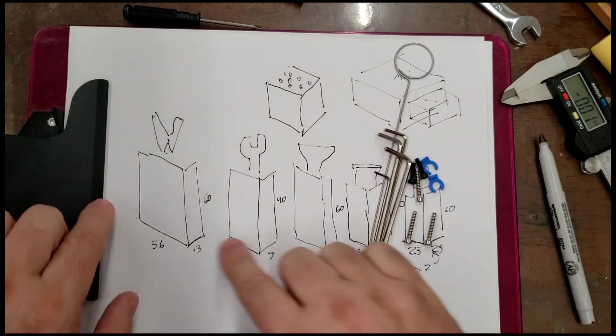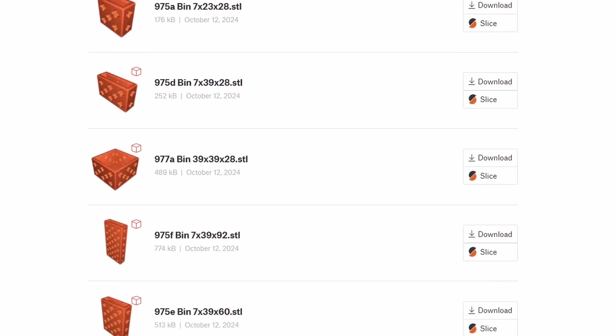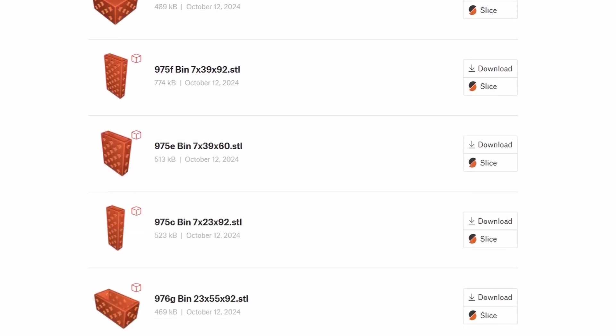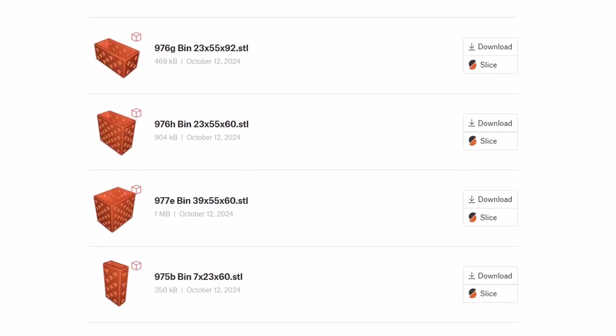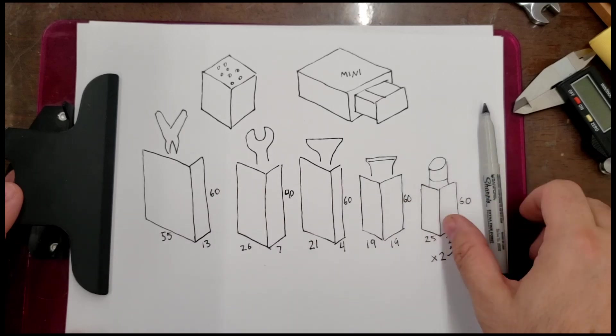So now I need to figure out which Storabloks will fit these. So looking at the file list for Storabloks, you'll notice that after the bins, there are three numbers. Those three numbers represent the short side, the long side, and the height of each of these bins. So first, we're going to need to find a bin that's at least 13 by 55 by 60.